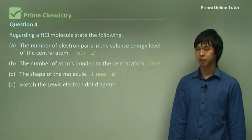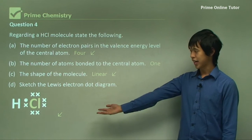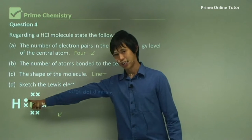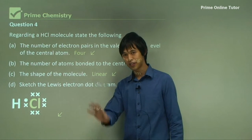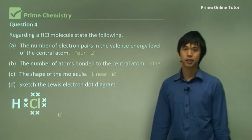And then sketch the diagram. So it's just H on one side that contributes one electron, Cl on the other side that has seven electrons, and then just stick them together.